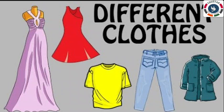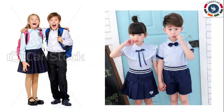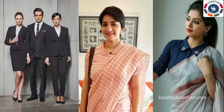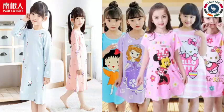Next, different types of clothes. We wear different types of clothes at different times of the day. For example, we wear a uniform to school, casual clothes while at home, formal clothes to the office, and night dress at bedtime.